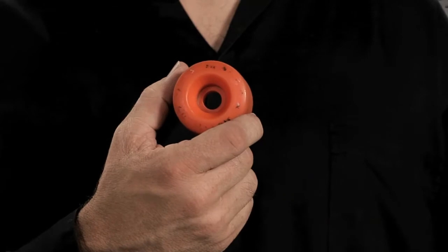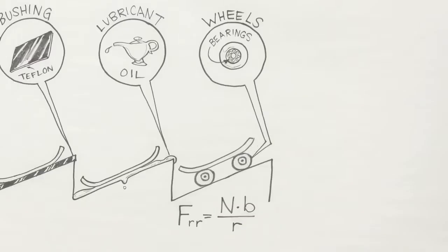Rolling resistance depends on how much materials deform, so good bearings are made from hard materials like metal or ceramics. The skateboard's wheels are made of hard plastic. Bigger wheels reduce rolling resistance too.